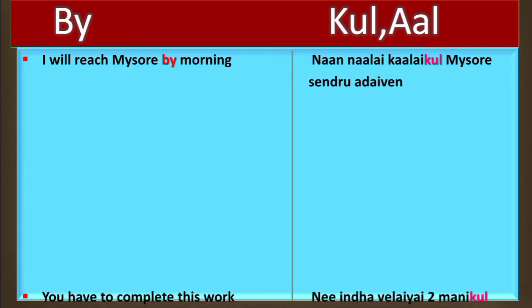The next example is: 'You have to complete this work by 2 o'clock.' In Tamil: Nii inda velayai irandu manikkuul mudikya veenndum. Nii means you, inda velayai means 'this work', irandu manikkuul means 'by 2 o'clock', and mudikya veenndum means 'have to complete'.